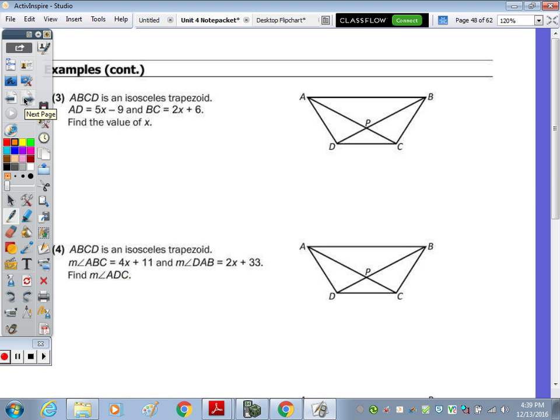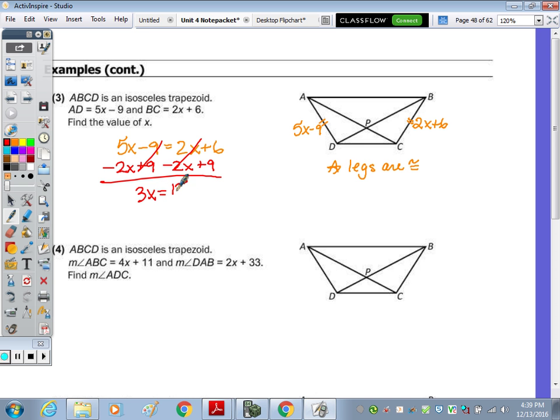Number 3. ABCD is an isosceles trapezoid. AD is length 5X minus 9. And BC is 2X plus 6. Well, in the isosceles trapezoid, these non-parallel sides called legs are congruent. So if they're congruent, we set their measures equal. So 5X minus 9 equals 2X plus 6. Subtract the 2X from both sides. I'm going to add the 9 over. 5X minus 2X is 3X. 9 and 6 is 15. Divide by 3. And X equals 5.